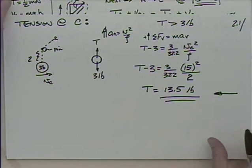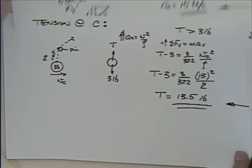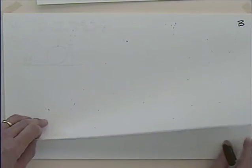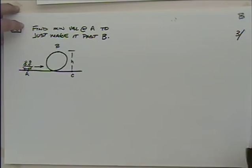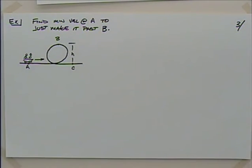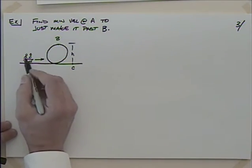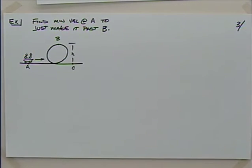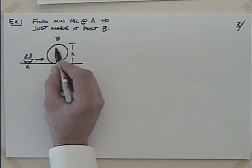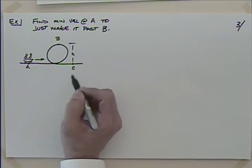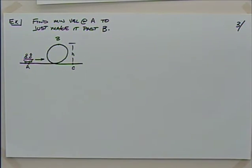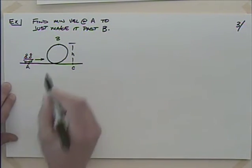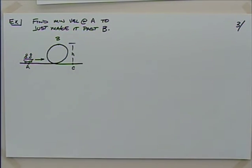The last problem is a very classic one — the roller coaster. You're one of these happy candidates at A on the roller coaster going to do a loop-de-loop and come out the other side. We'd like to find the minimum velocity at A to just make it past B at the top of the loop. If you're going too slow at A, you're not going to make it.